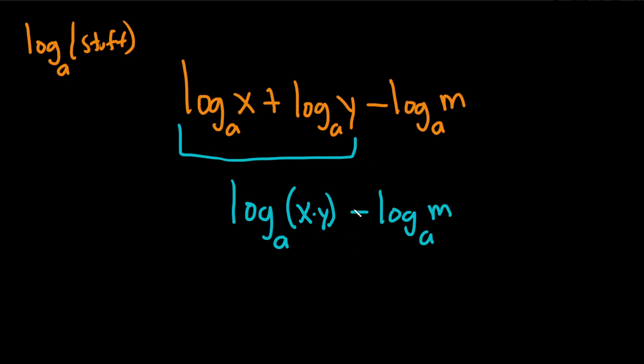The next property we're going to use tells us how to deal when we're subtracting logs. I'll write it over here. If you have the log base a of x over y, this is called the quotient rule.